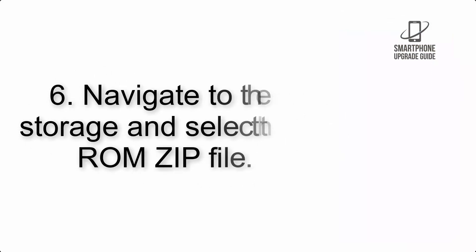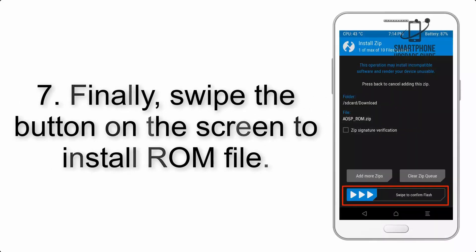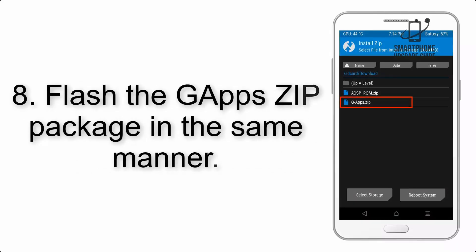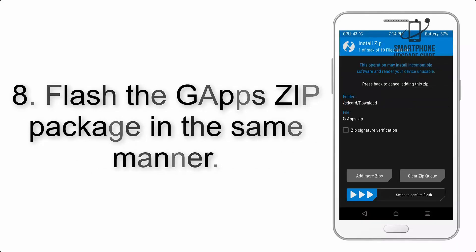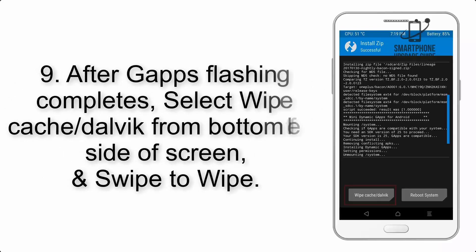Step 5: Go back to the recovery main screen and tap on the Install button. Step 6: Navigate to the storage and select the ROM zip file. Step 7: Finally, swipe the button on the screen to install the ROM file.